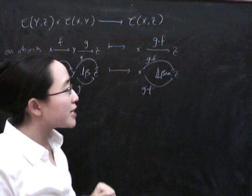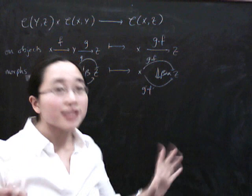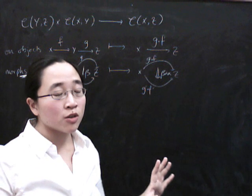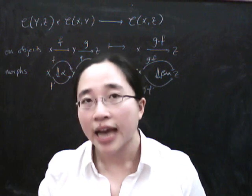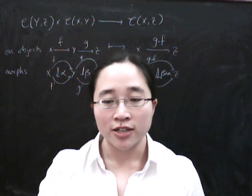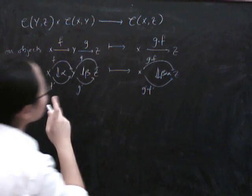What we're going to show is we're going to look at what functoriality means here and show that it precisely corresponds to the middle four interchange law that we saw before when we were doing natural transformations. The key to seeing how this corresponds to the middle four interchange law is to remain calm and possibly give yourself a bit more notation.